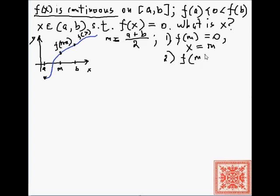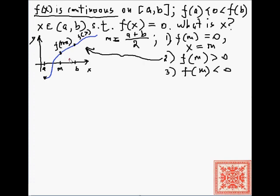If we are not so lucky, there are two more cases to consider: f(m) strictly greater than 0 and f(m) strictly less than 0. If f(m) > 0, as shown in this diagram, we can safely discard the interval from m to b and focus on the interval from a to m. Because f(m) > 0 and f(a) < 0, since f is continuous, if there is an x such that f(x) = 0, it has to be between a and m — greater than a but less than m.